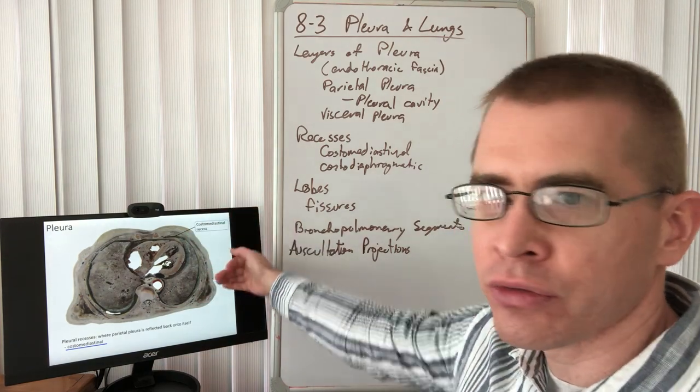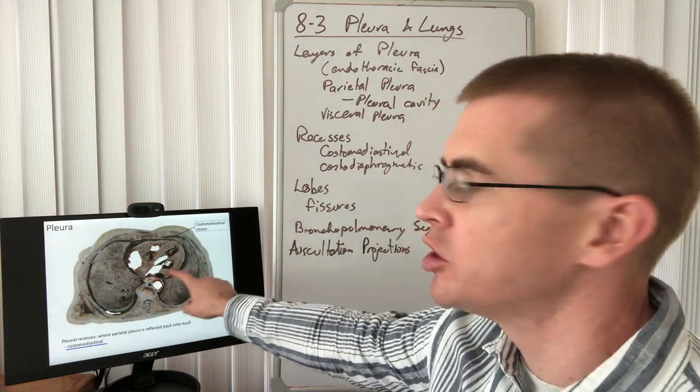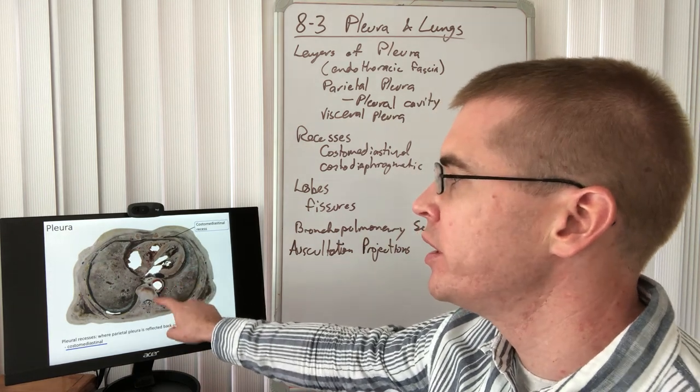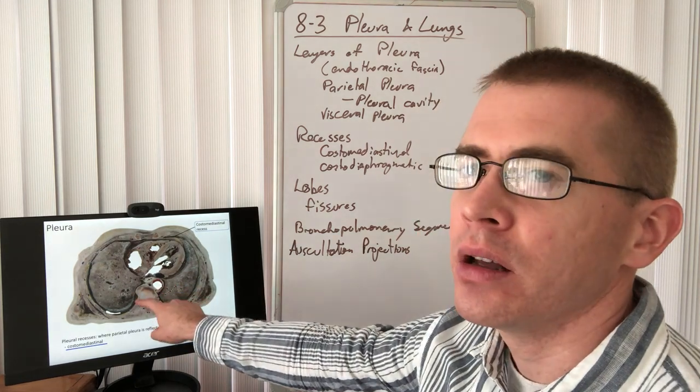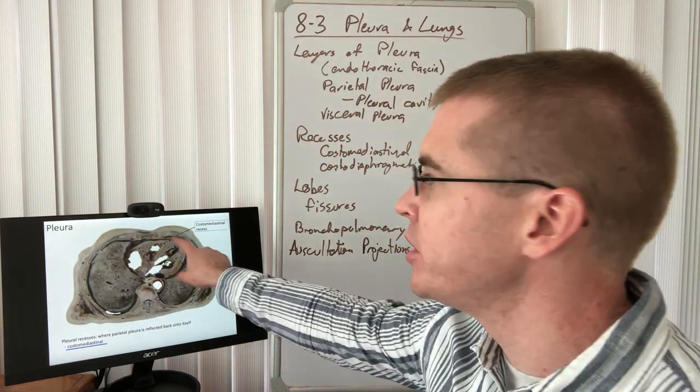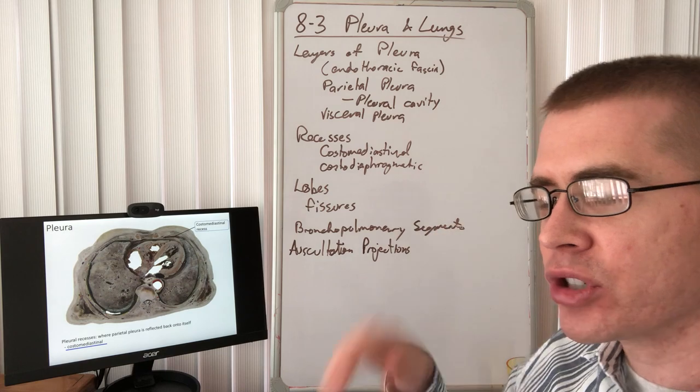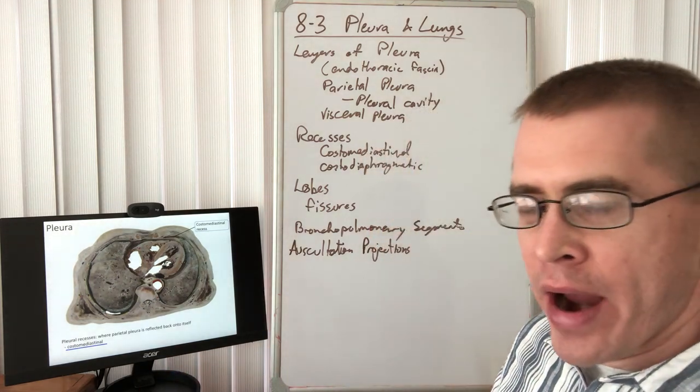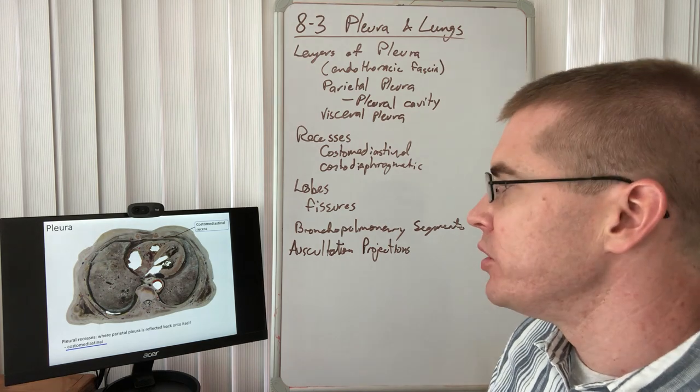This is a cross-section through the thorax. We can see the chambers of the heart here, the aorta, and the vertebral body with the thoracic wall. The costomediastinal recess is the most anterior portion. So if an individual is laying prone, that will be the space where fluid builds up.